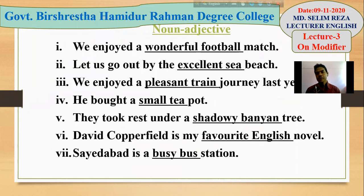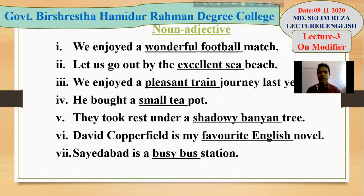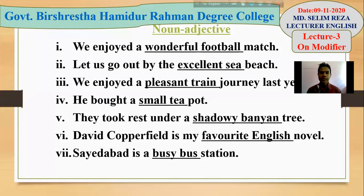First of all, I'd like to tell you something about noun adjective. Noun and adjective are two separate parts of speech, but here together they express a complete meaning. In the first example, 'we enjoyed a wonderful football match' — here 'wonderful' is an adjective and 'football' is a noun. Together they give extra information about the very noun 'match' and take place before it, so it's a premodifier. 'Excellent series' is another example — adjective and noun together give extra information about the noun, used as premodifier.